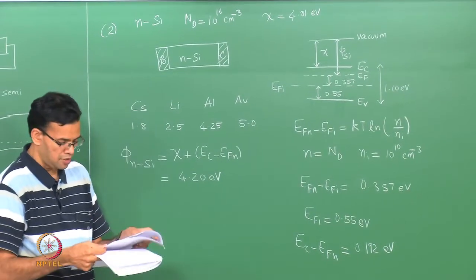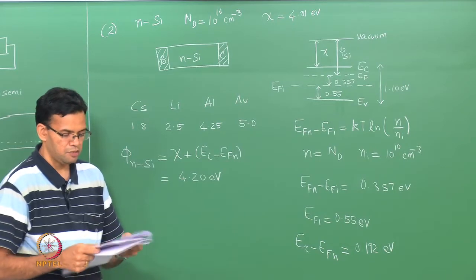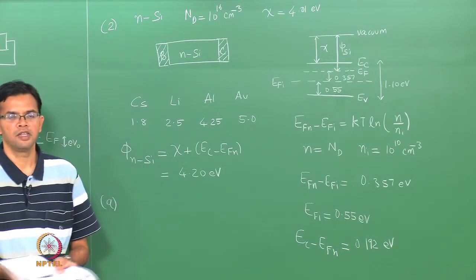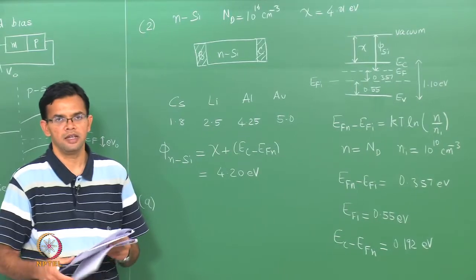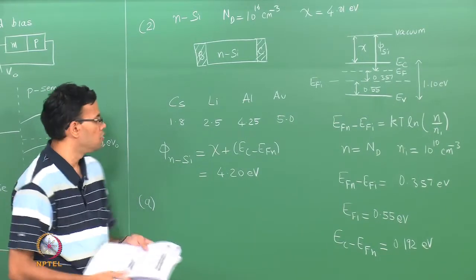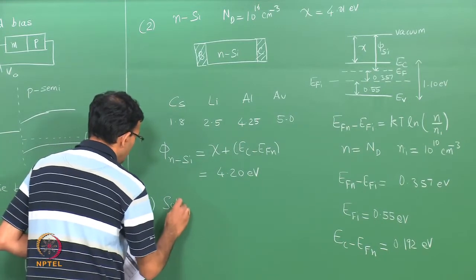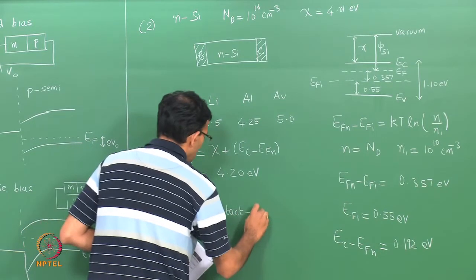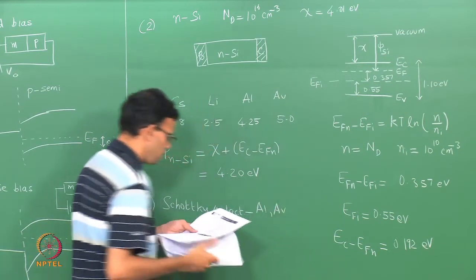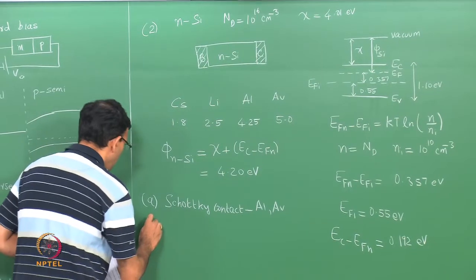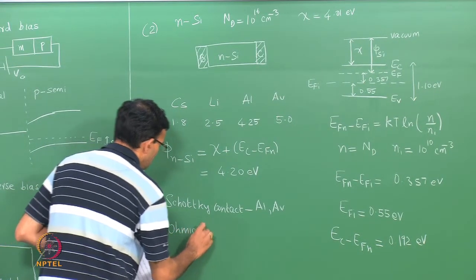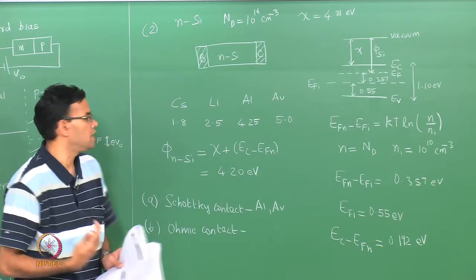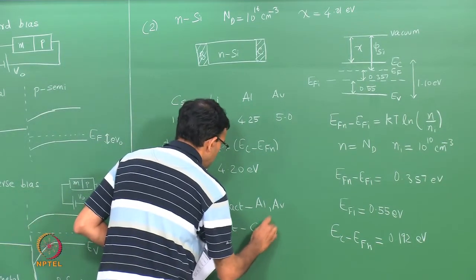Looking at the various parts of the question: part a asks which metals will result in a Schottky contact. We have a Schottky contact when the work function of the metal is greater than the work function of the semiconductor (4.20 eV). Those are aluminum and gold. For part b, an ohmic contact is the reverse — the work function of the semiconductor is higher — so it is just cesium and lithium.